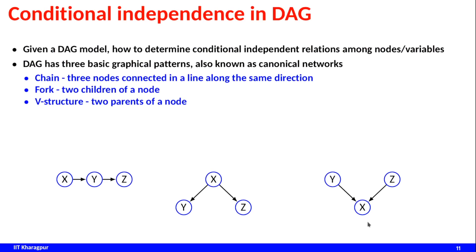Now, finding conditional independence is the most important thing, because if we can find it we can simplify our computation. Given a DAG model, how do we determine the conditional independence relations among nodes and variables? A DAG has basic graphical patterns known as canonical networks. Typically the network structures we analyze can be a simple chain, a fork, or a V-structure.